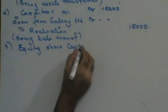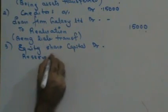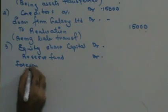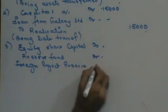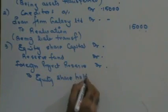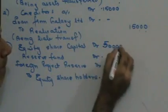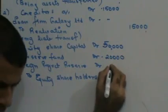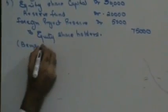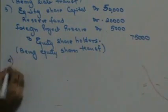Equity Share Capital Account debit, Reserve Account debit, General Reserve debit, Foreign Project Reserve Account debit to Equity Shareholders Account. Equity share capital is 50,000, General Reserve is 20,000, and Foreign Project Reserve is 5,000 — total 75,000. Equity shares transferred.